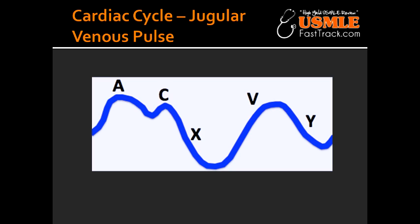What is the A-wave of the jugular venous pulse? The A-wave of the jugular venous pulse is the atrial contraction. What is the C-wave of the jugular venous pulse?